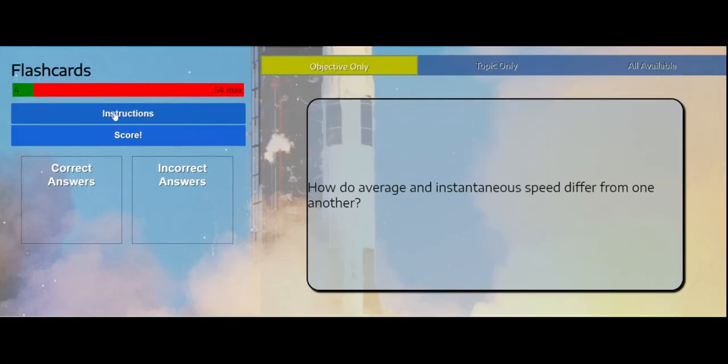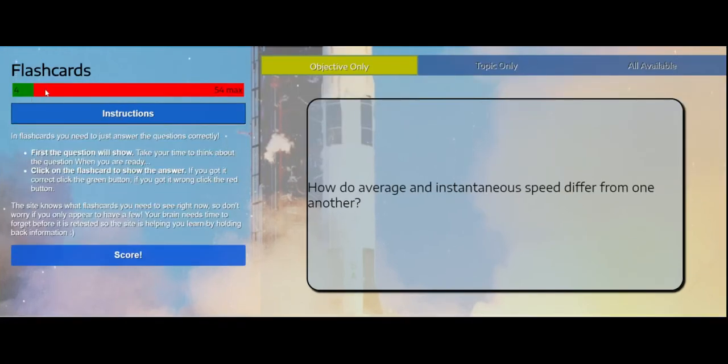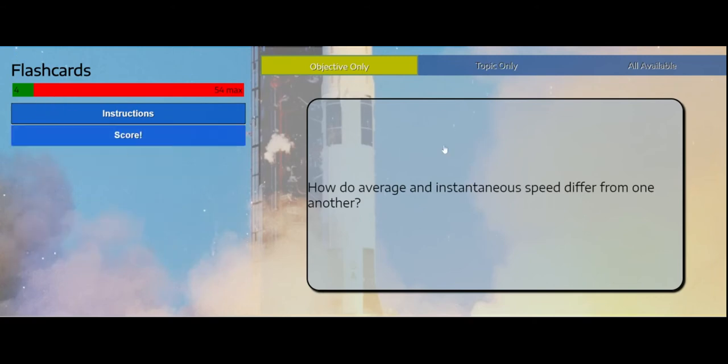Now this is a little bit more tricky. You've got your instructions down here and your points as normal. And up here you have three different buttons: Objective only, topic only, and all available.